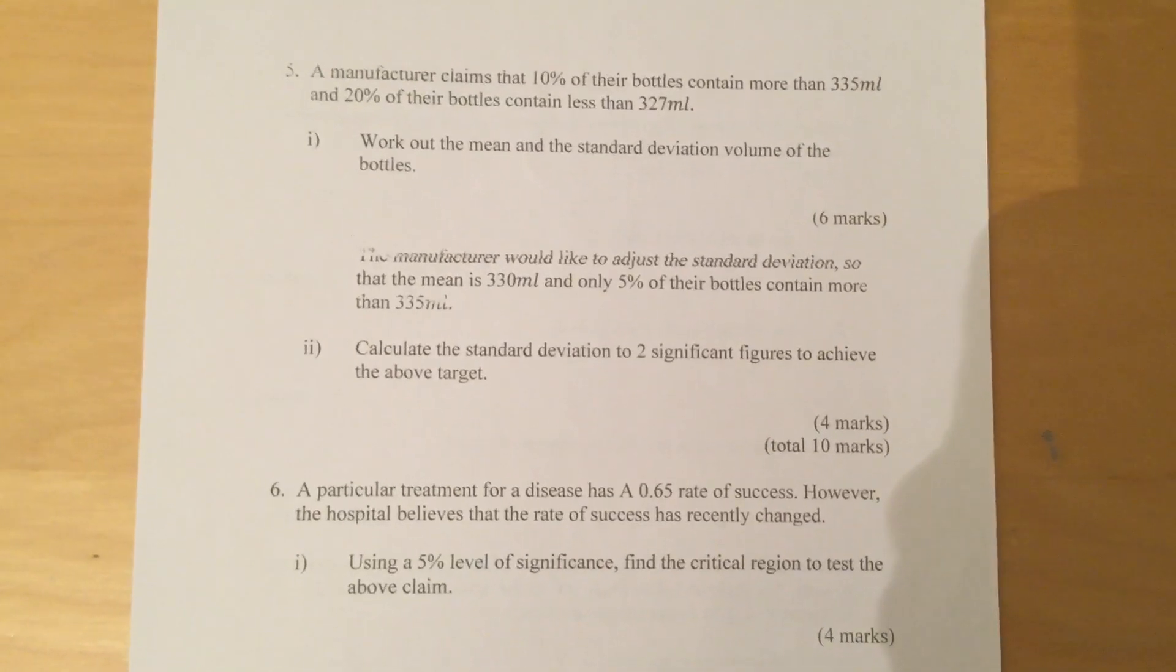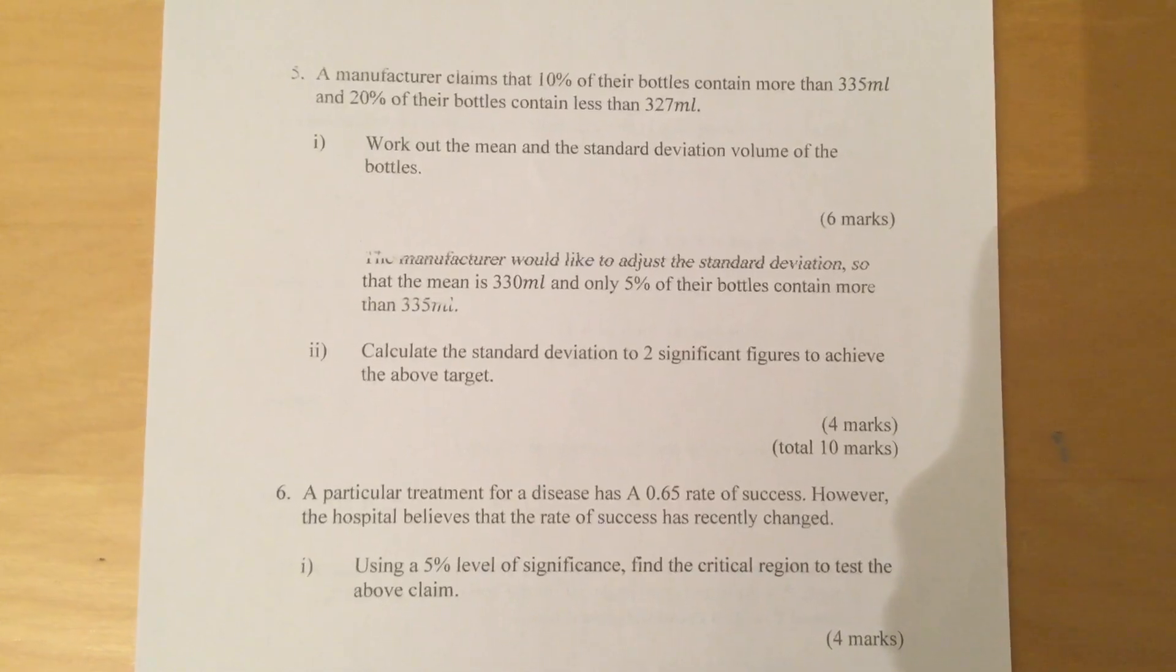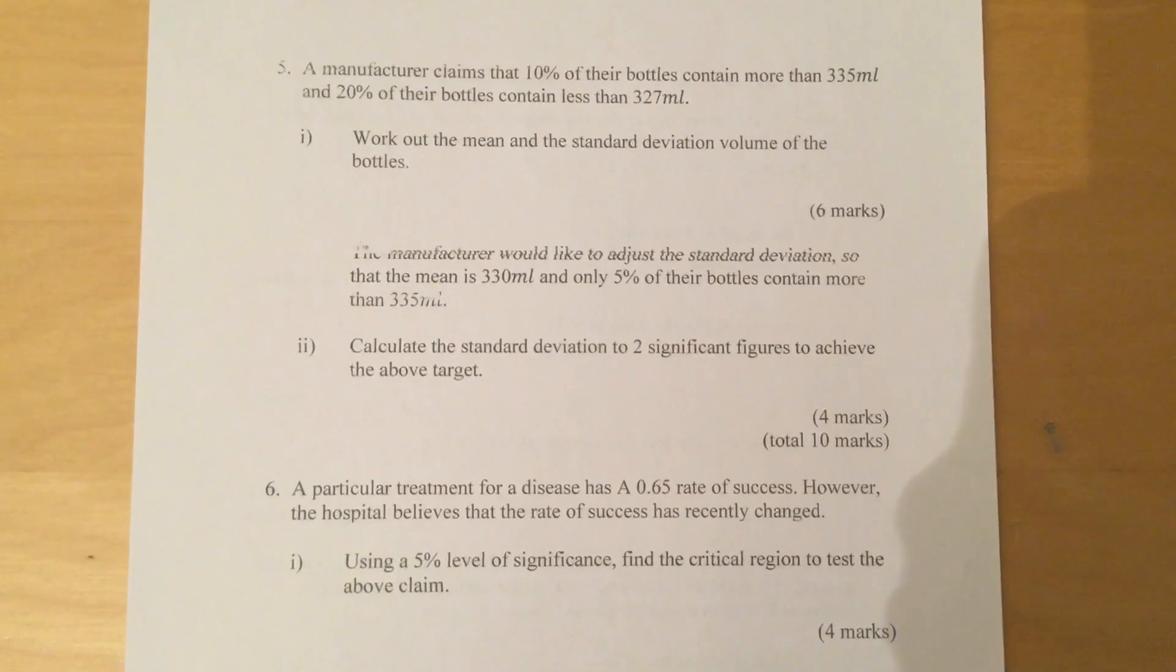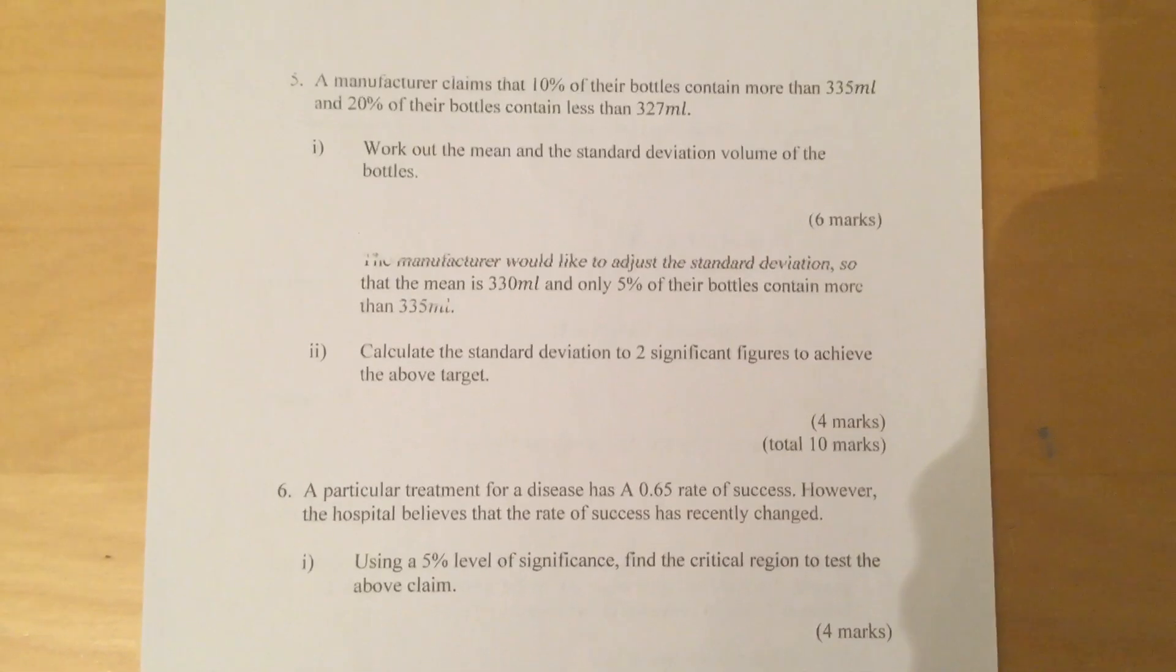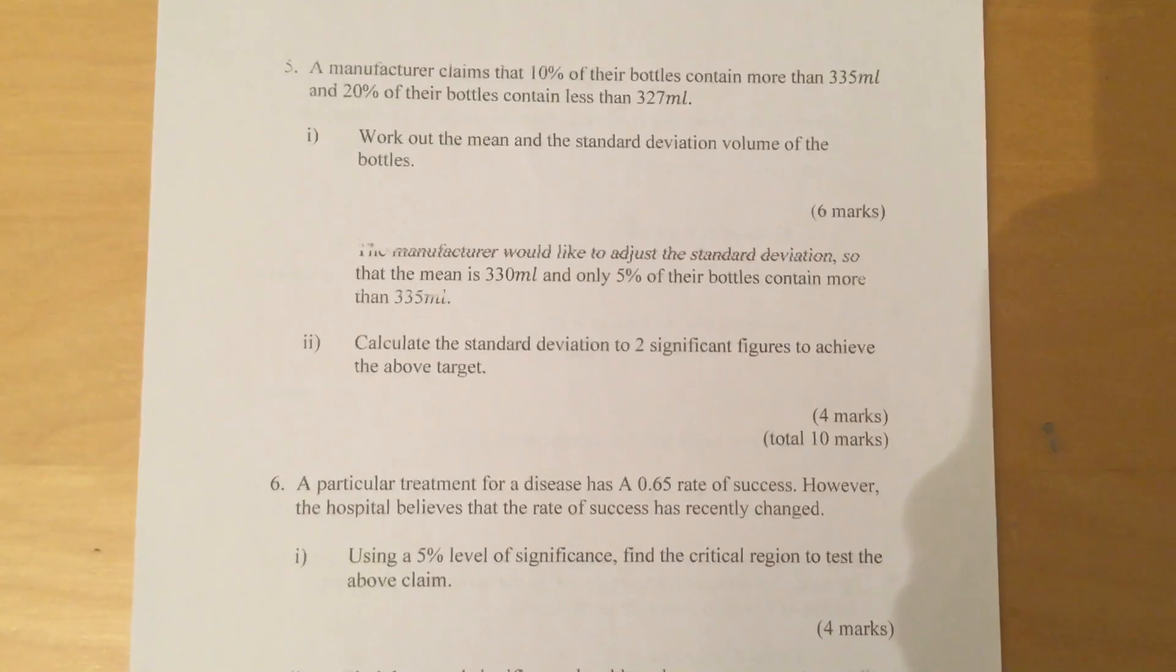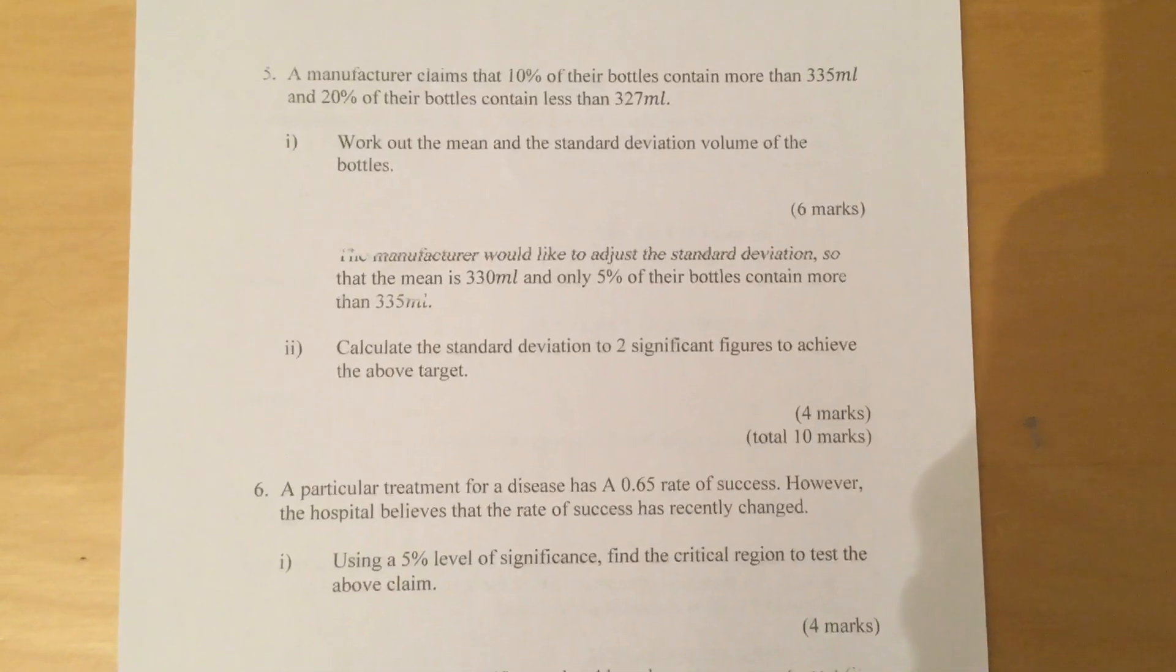The manufacturer would like to adjust the standard deviation so that the mean is 330 milliliters and only 5% of their bottles contain more than 335 milliliters. Part 2: Calculate the standard deviation to two significant figures to achieve the above target.